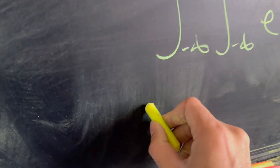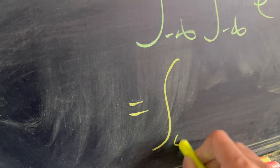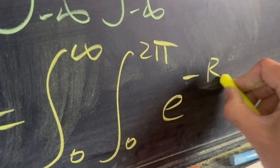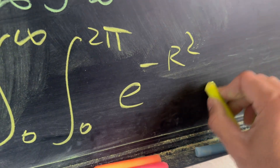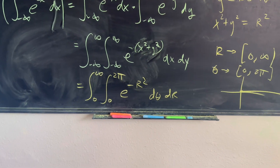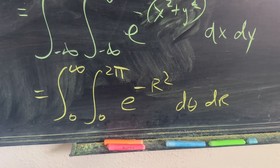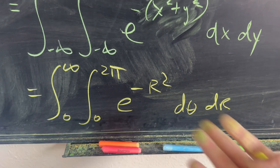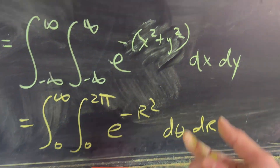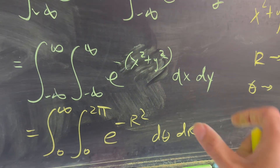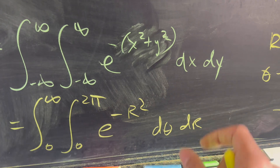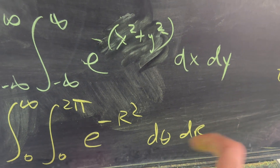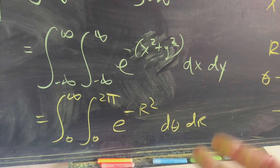So now we have the integral from zero to infinity, and then the integral from zero to 2 pi of e to the negative r squared, with respect to theta and r. This looks correct in polar coordinates, but we have to apply something called the Jacobian — because as we translate from x and y to r and theta, every small sector changes by some factor, and we need to find that.